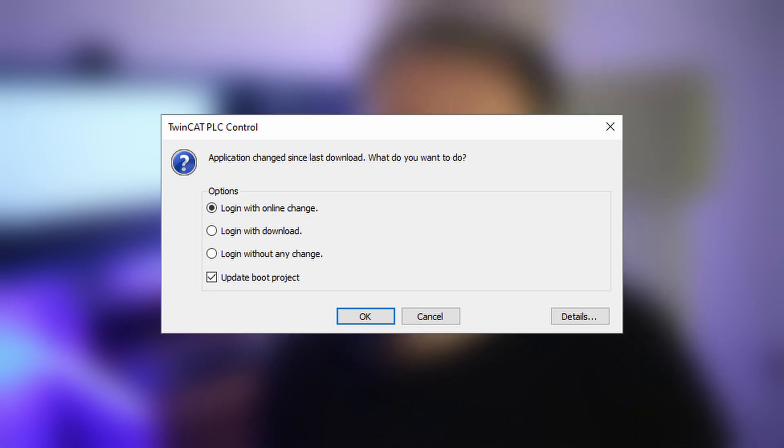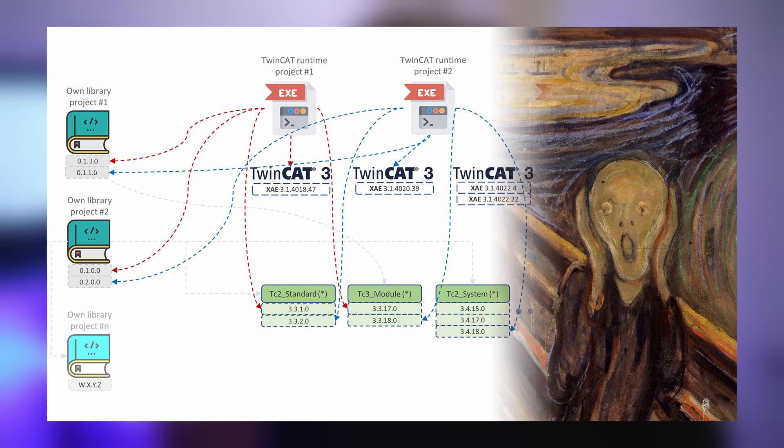Most of us that have been working with TwinCat3 have at some point or another been met with this window. What this window basically says is that the executable binary you just compiled — which is on your development machine — is different from the one on the target device you are trying to log into. This window shows whether it is your intention or not to do an online change, and it's the unintentional times that are the problem. One thing that Beckhoff has made unnecessarily complicated is the handling of different versions of TwinCat. There are things like the remote manager, pinning, and library freezing that take care of part of the problem. But I've seen even seasoned TwinCat3 developers swear they had not changed anything in the build chain, but still gotten this window to pop up. There are too many conditions to be met.